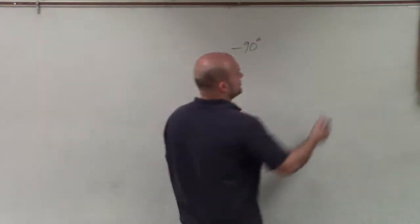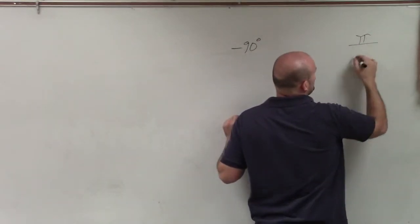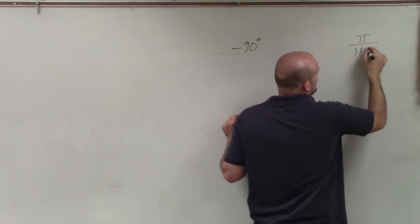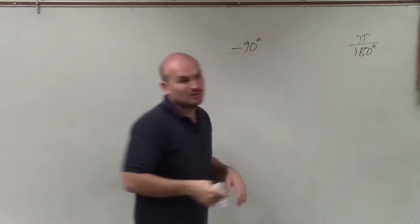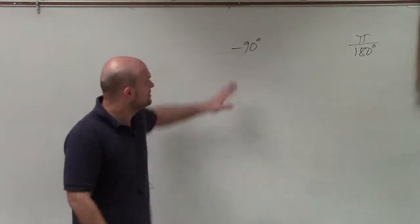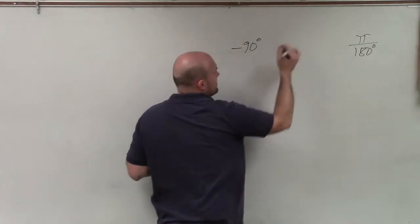So to go ahead and do that, I erased that. My conversion fraction for degrees to radians is pi over 180, because they're equivalent, but they're in different units. So to do this, all I'm going to do is multiply by this fraction.